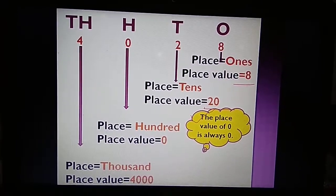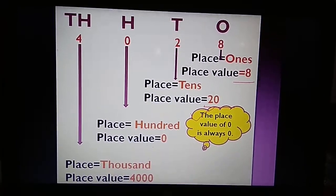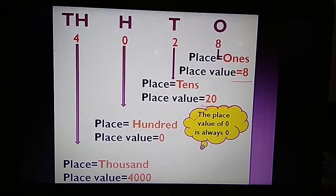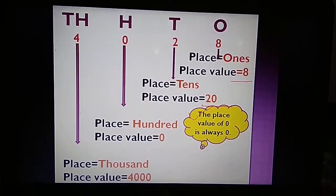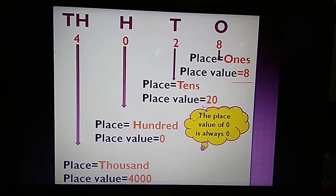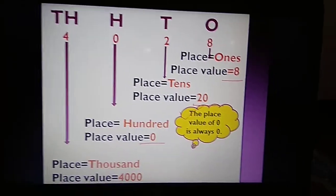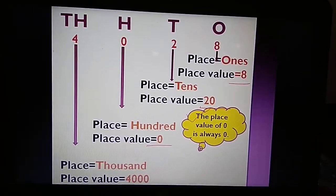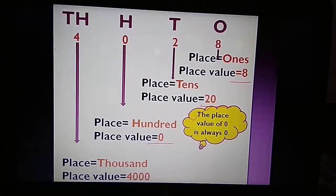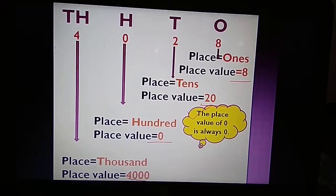Now we need to remember one thing: no matter what place 0 is holding, the place value of 0 is always 0. Thus the place value of 0 is 0. For a digit holding the 1000s place, its place value is 4000.